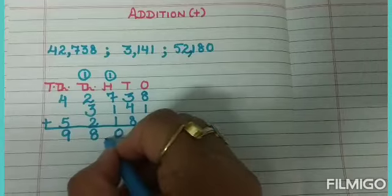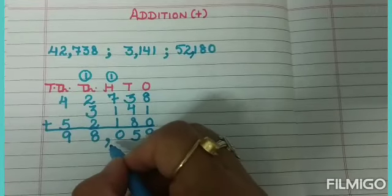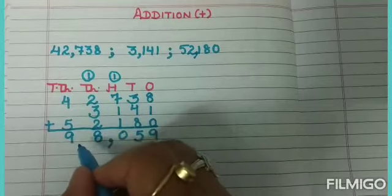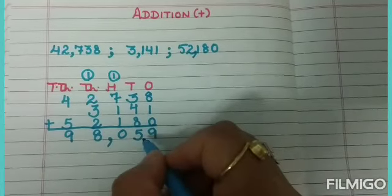Then after adding, put commas. After ones, tens, hundreds is complete, we put a comma there. So the answer is 98,059.